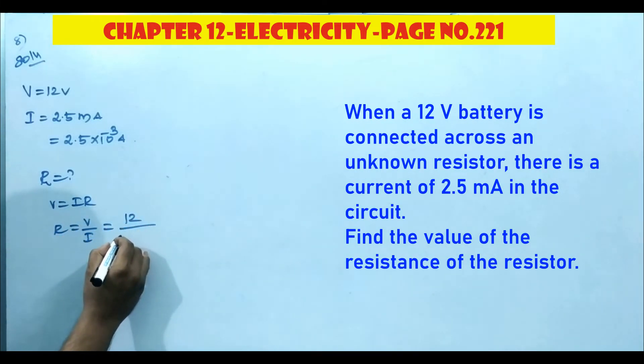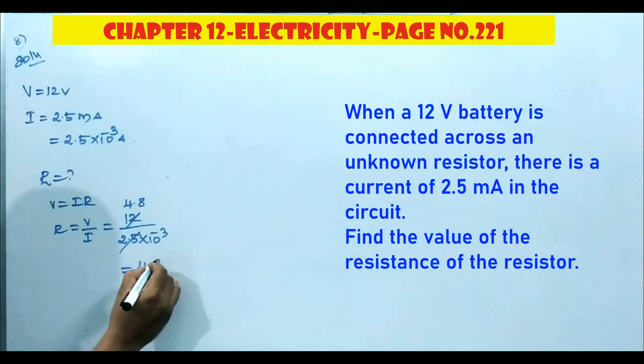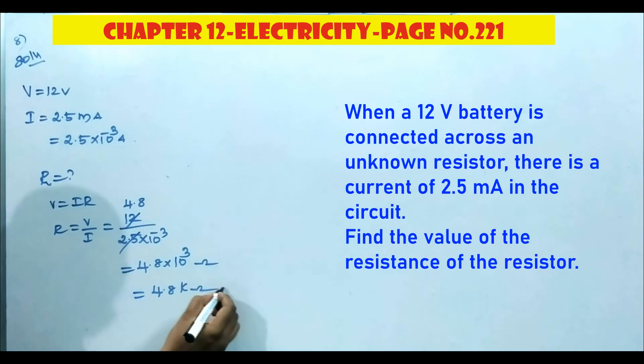So V is 12 by I is 2.5 into 10 power minus 3. We can write 2.5 in 12 as 4.8, then 4.8 into denominator taken to numerator, then 10 power 3 ohm. We can write this is 4.8 kilo ohm. That is the answer.